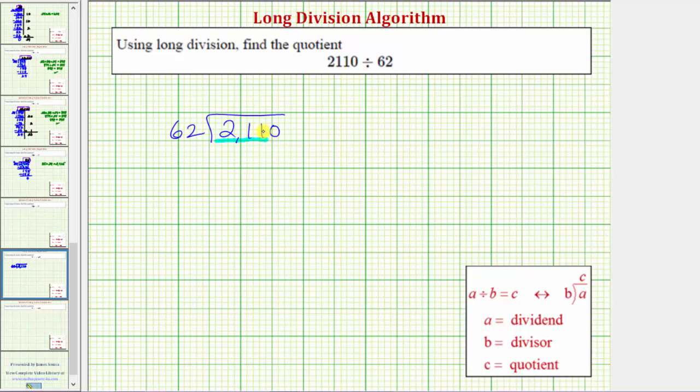So we begin by considering 211, and we need to determine how many 62s are in 211. That may or may not be easy to do. One thing that might help would be to round 62 and 211 to the nearest 10 and consider that quotient.